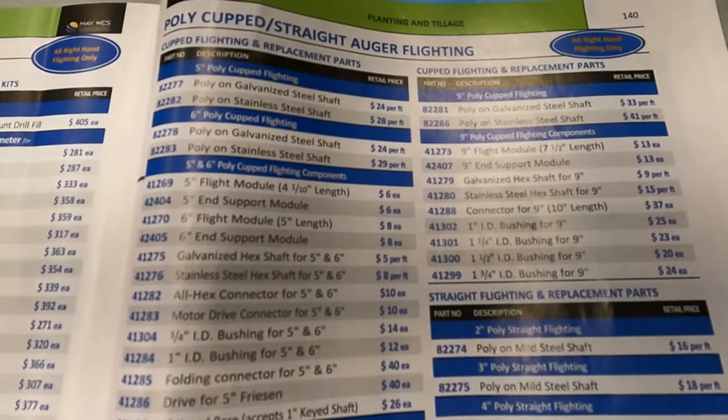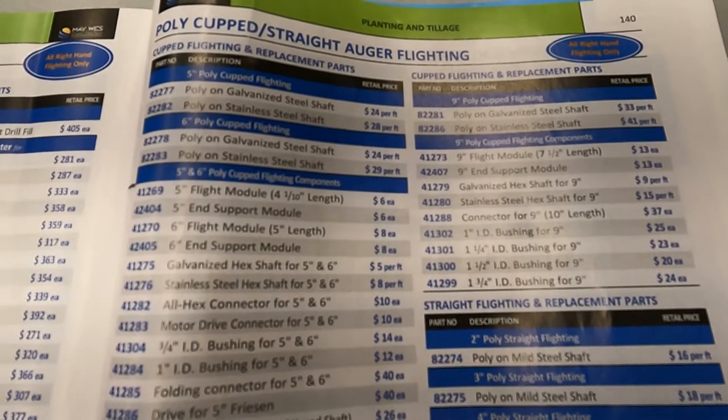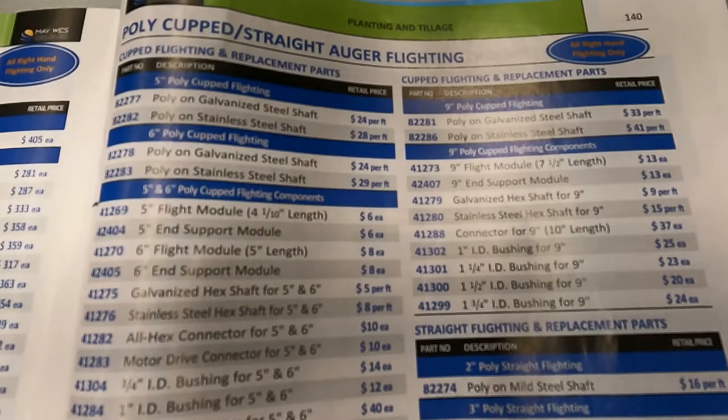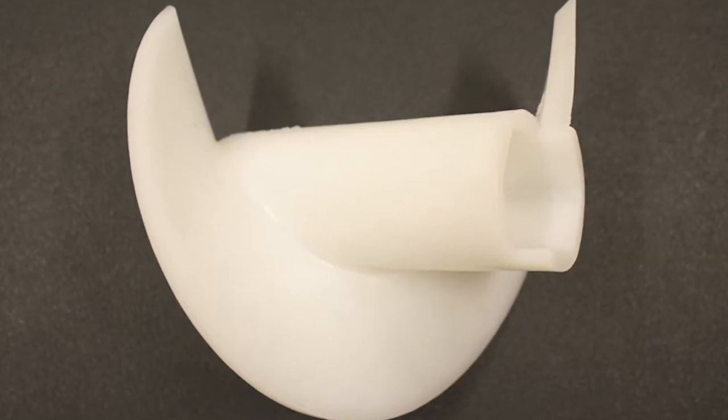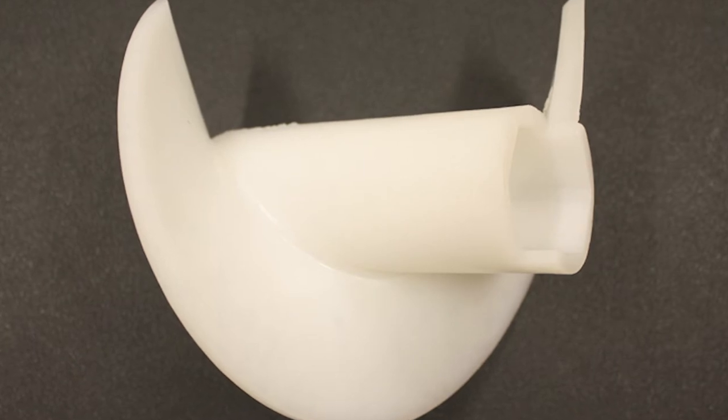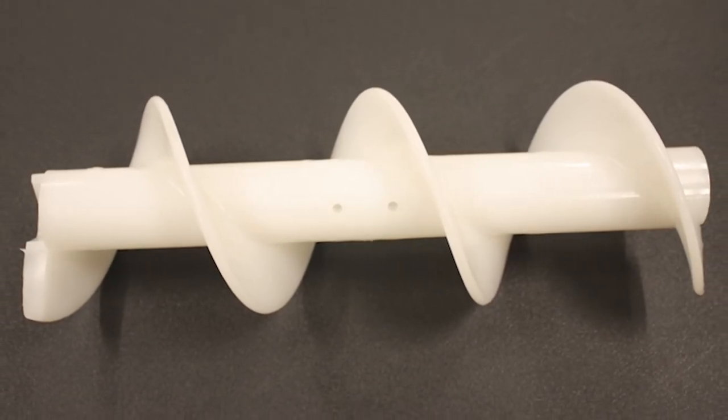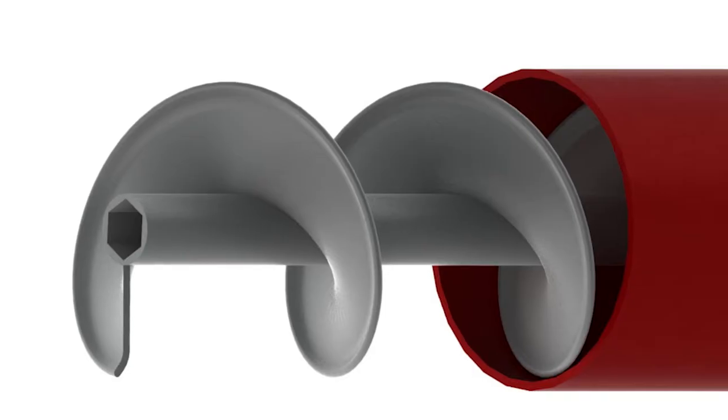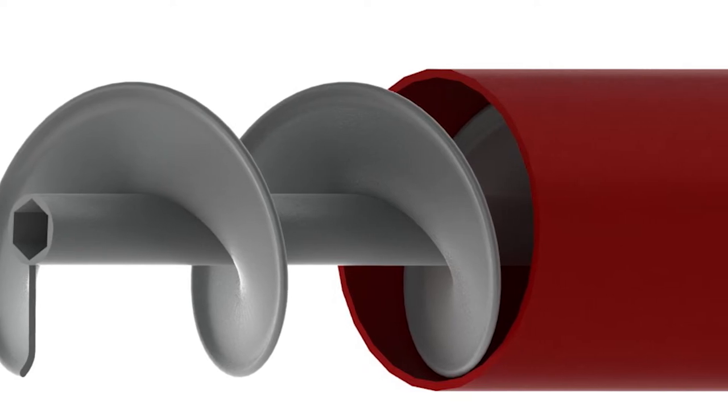Next you will need to determine what diameter of flighting you will need. So how do you determine what diameter you need? Straight flighting will be 3 eighths to a half inch smaller diameter than the outside tube diameter. Cup flighting will be one inch smaller than the outside tube diameter.